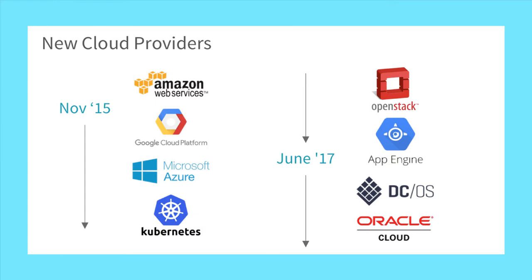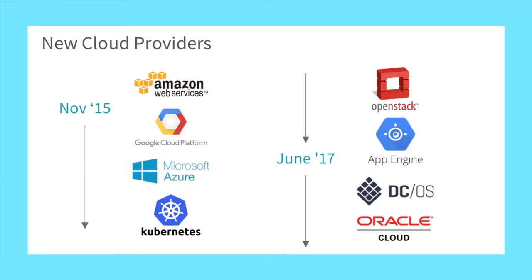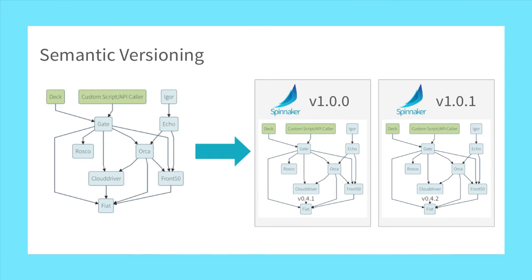If we're going to be a multi-cloud platform, we should support multiple clouds. When we launched initially it had support for Amazon ECS and Google Compute Engine. Over the last year and a half we added more: Microsoft came on with Azure, Kubernetes was a big one, OpenStack, and App Engine. Looking ahead, DC/OS is currently in flight by Cerner, and Oracle bare metal is on deck. We're building out a pretty good representation of major cloud providers.